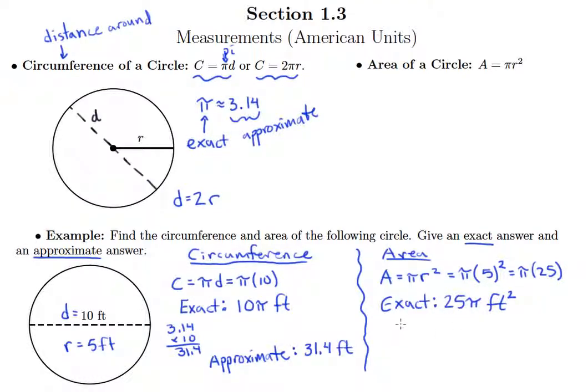And then our approximate we get by going ahead and taking 3.14 for pi, multiplying that by 25.